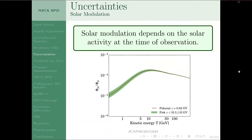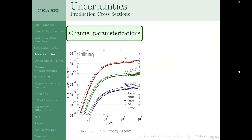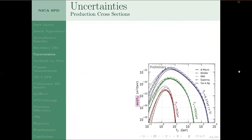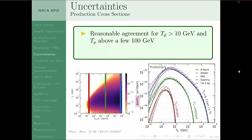The most significant source of uncertainty is the production cross-section. We don't know the cross-section of antiproton production for each collision channel — there are only parameterizations, with no observational data to conclusively pinpoint this cross-section. The uncertainty can range from 20 to 50 percent depending on energy. Even among existing parameterizations, while they agree for antiprotons above 10 GeV with colliding protons of a few hundred GeV, there is quite a deviation for antiprotons below a few GeV.